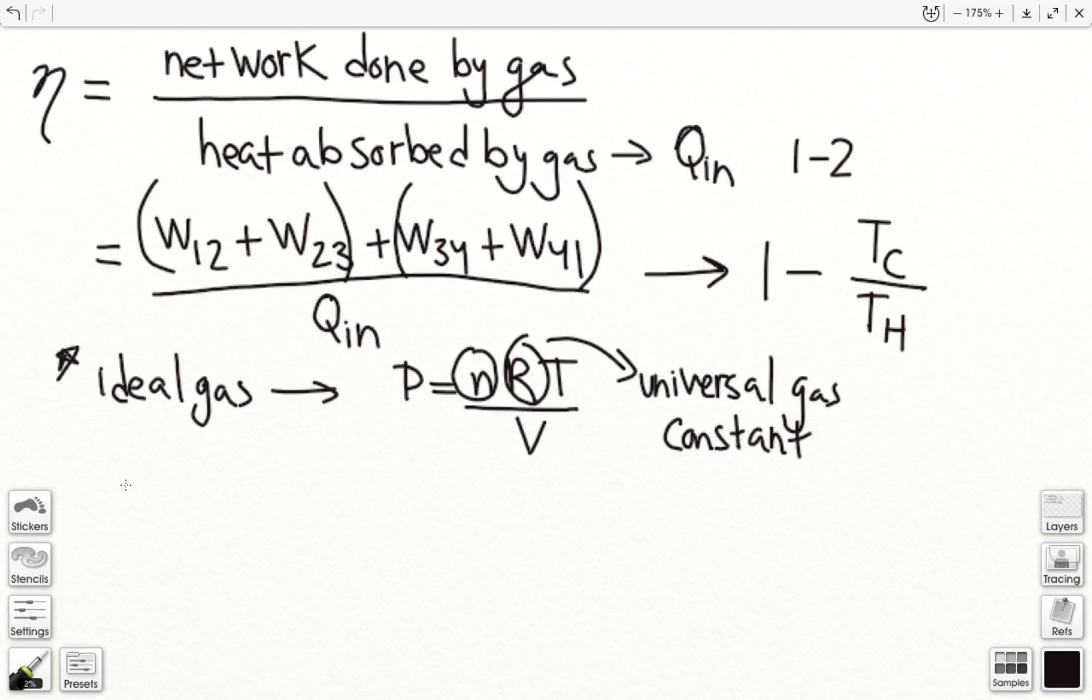Okay, so the reason why that's important is for, as we're figuring out the work from 1 to 2, one thing to note is that from 1 to 2 is an isothermal process, and because our gas is ideal, it is not changing phases from 1 to 2.